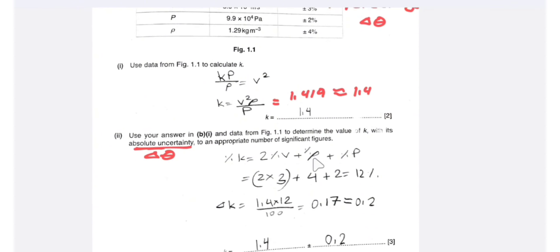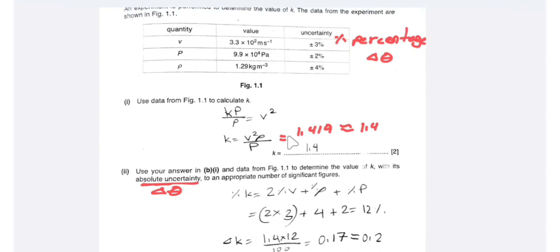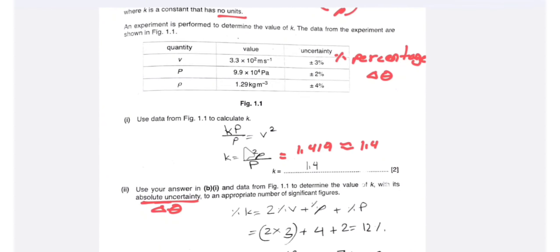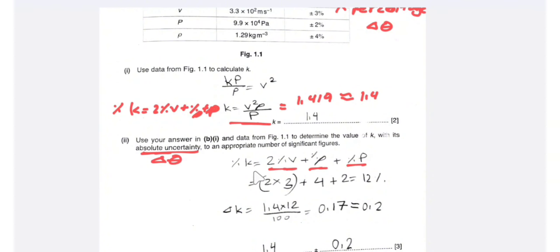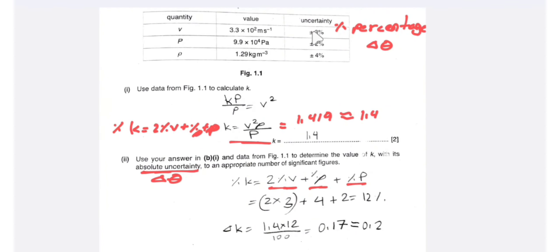We already know the value of k is 1.4. For the percentage uncertainty in k, since the equation involves v squared, the formula is: %uncertainty in k equals 2 times %uncertainty in v, plus %uncertainty in rho, plus %uncertainty in p. Note that whether a quantity is divided or multiplied, we still add its percentage uncertainty.